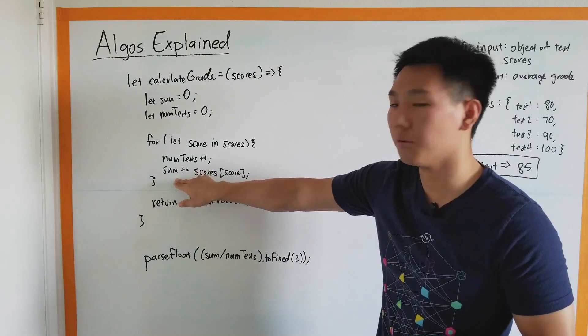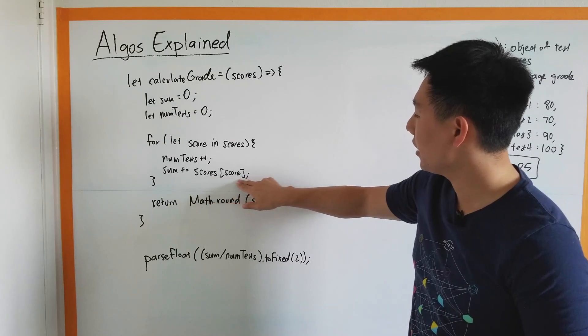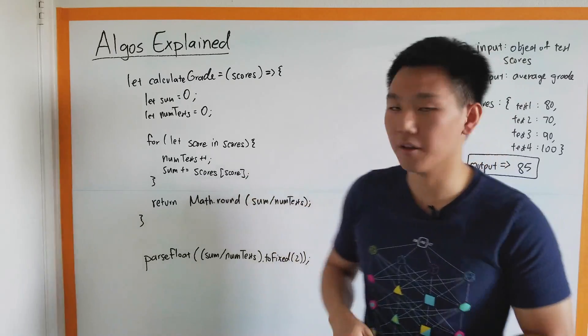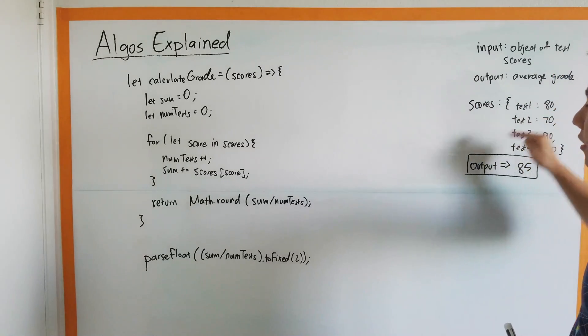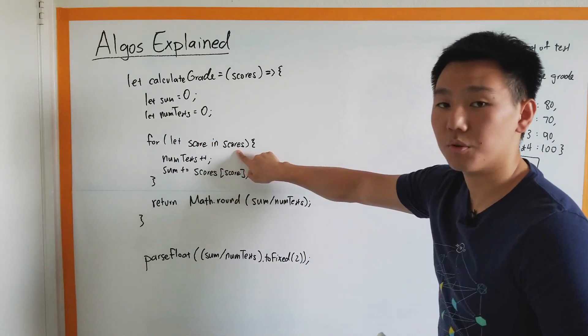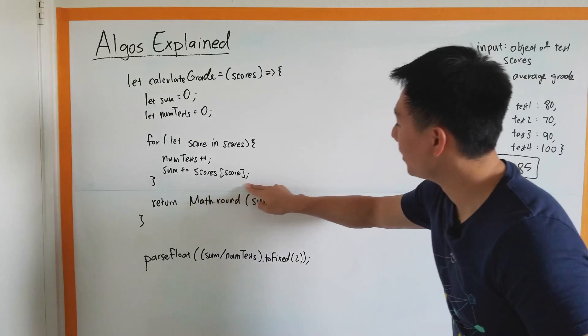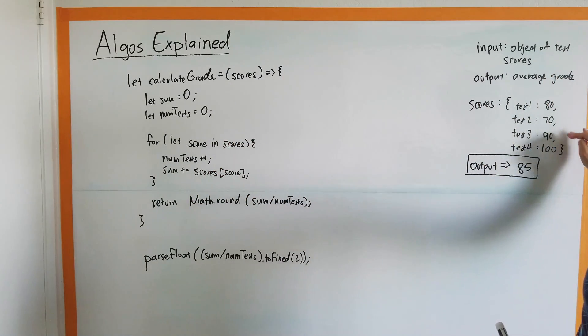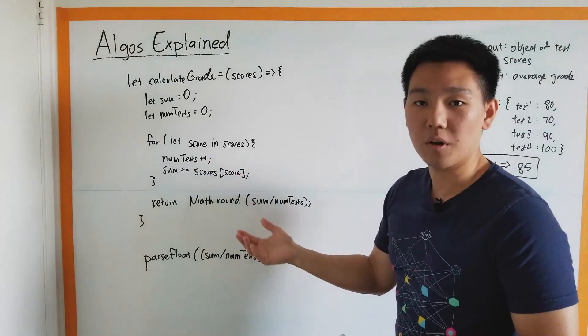Sum is going to be the sum of the scores. What we're going to do is tap into the scores object by doing this bracket score, and so that's the object, that's the key, and by doing this, we get what the value is. If we're iterating through it, test one is represented by the variable score. You can also call that key, these don't really matter, this does matter because that determines which object you're going through. Scores bracket score is going to give you the value, that's going to give you 80, and so you're going to do sum plus equals 80. As you iterate through all of these, your total sum is going to increment by the score, and the numTest is going to increment by one, which is exactly what we want to do.